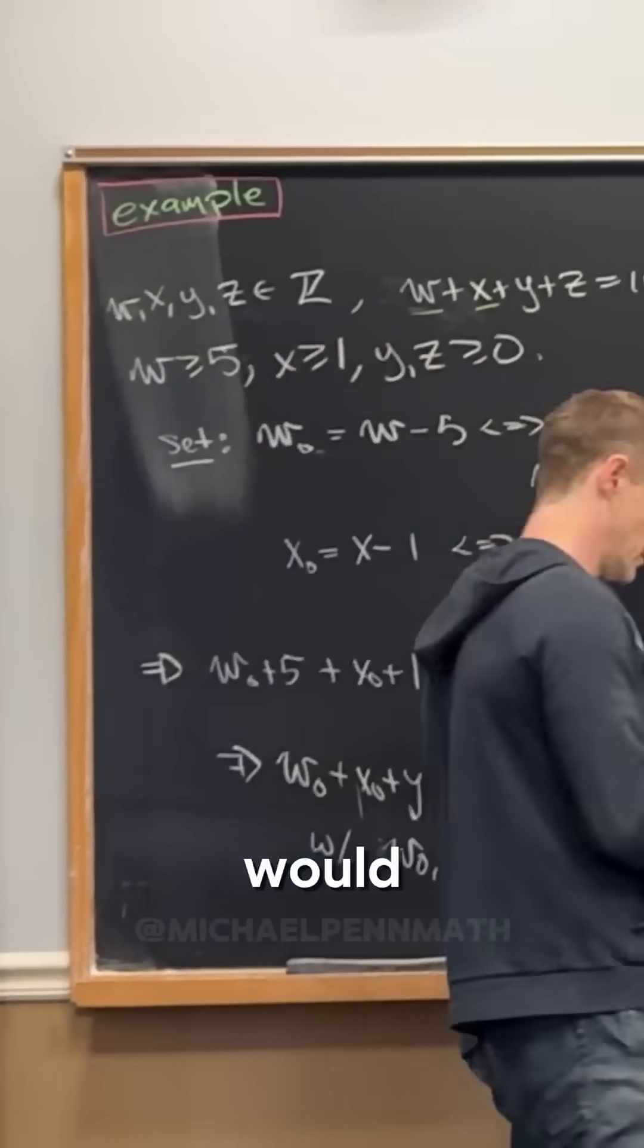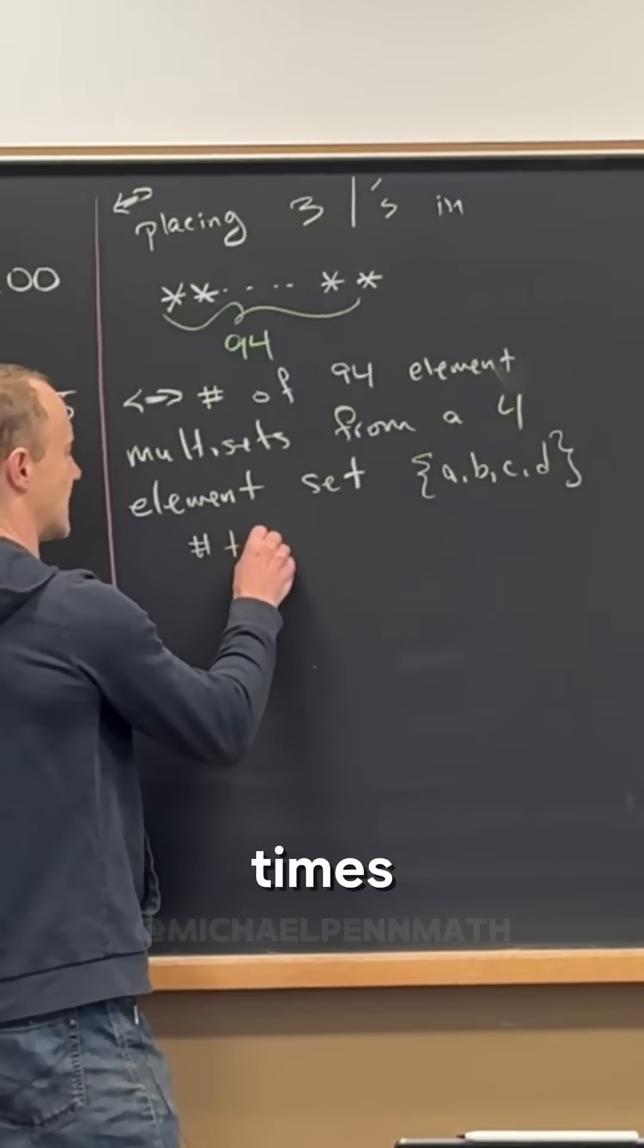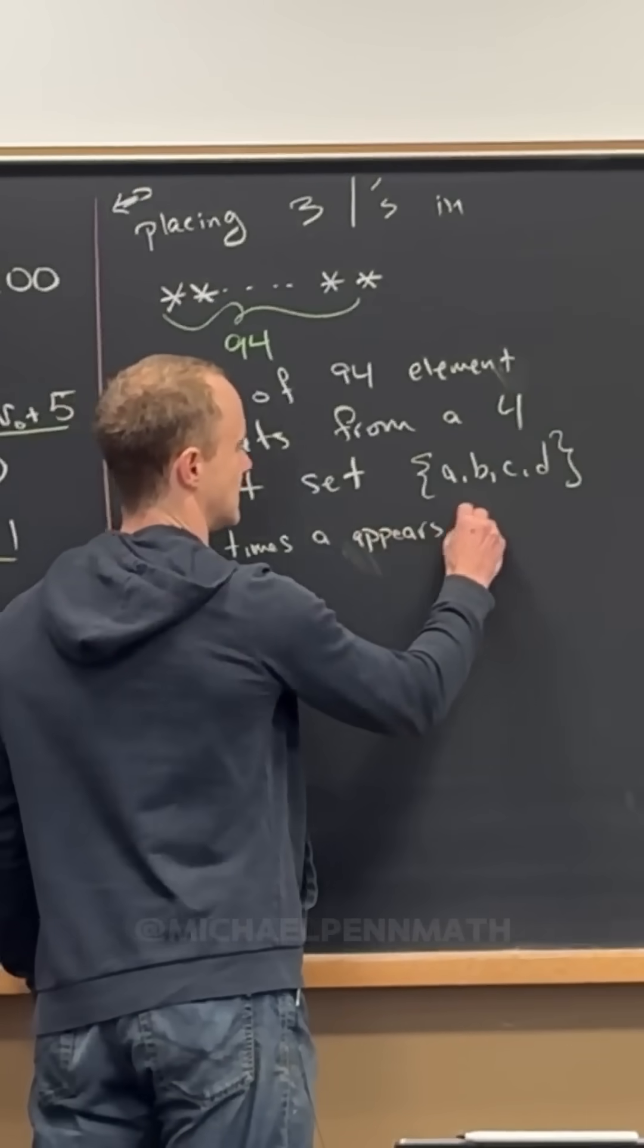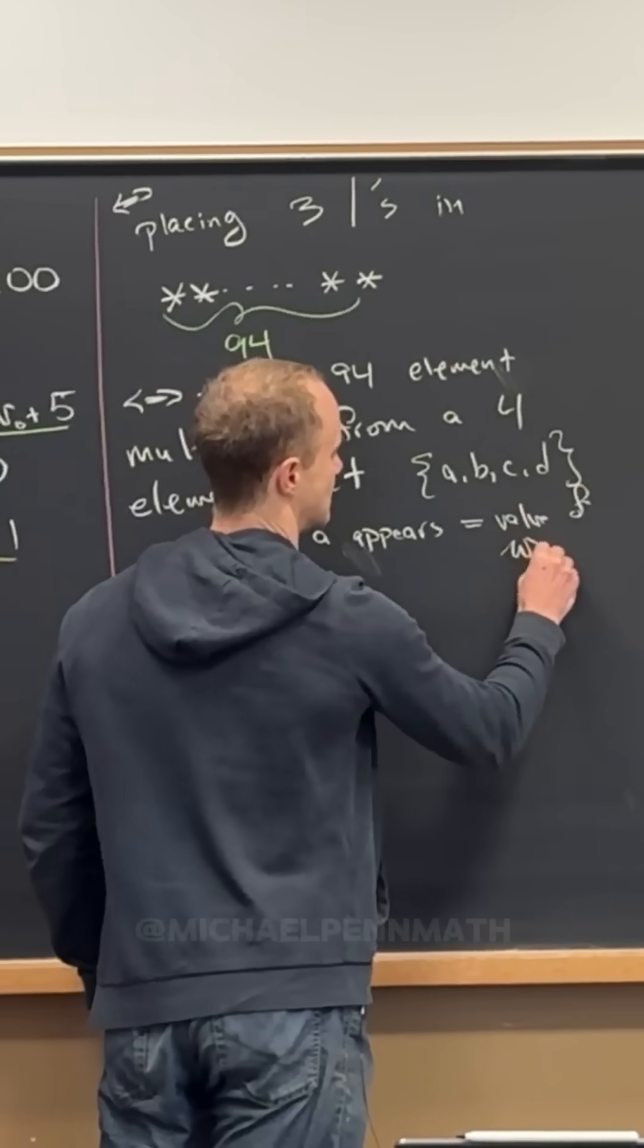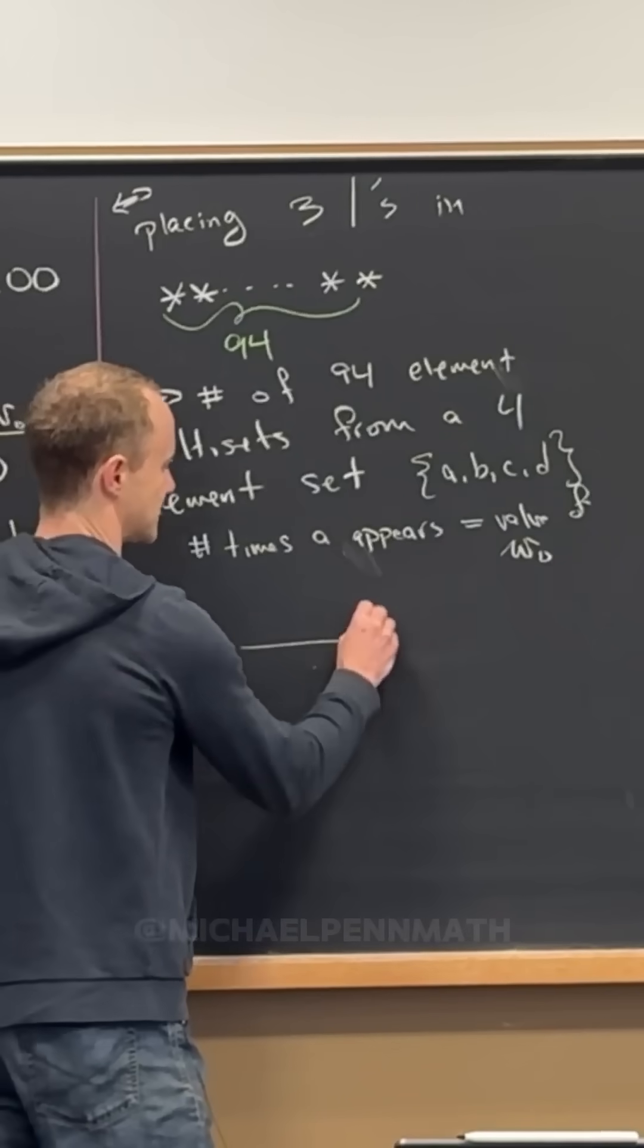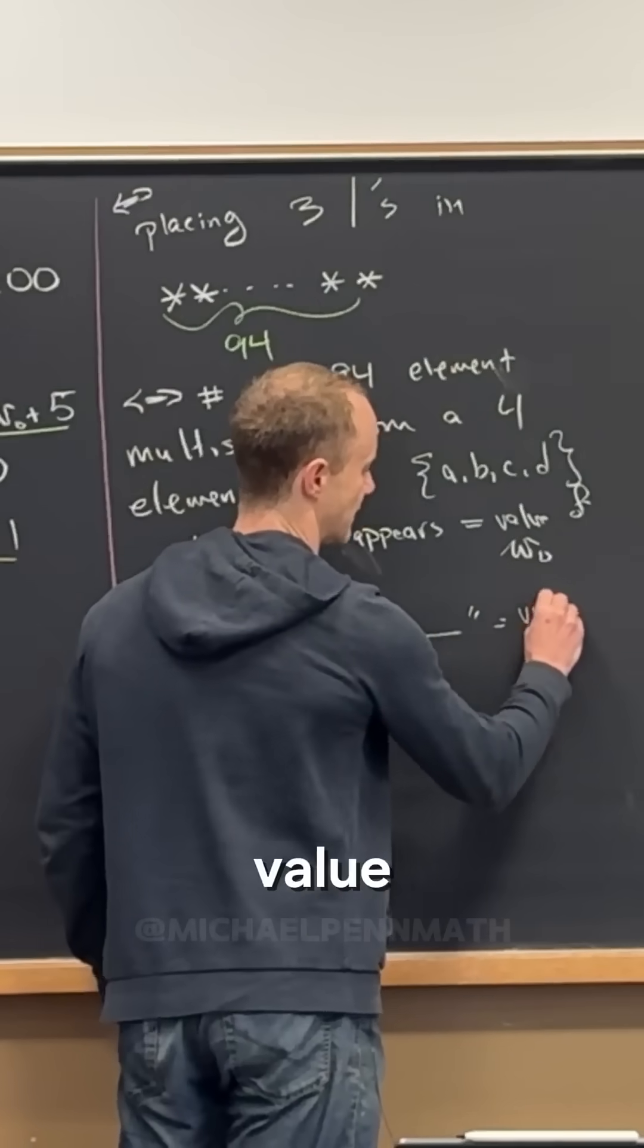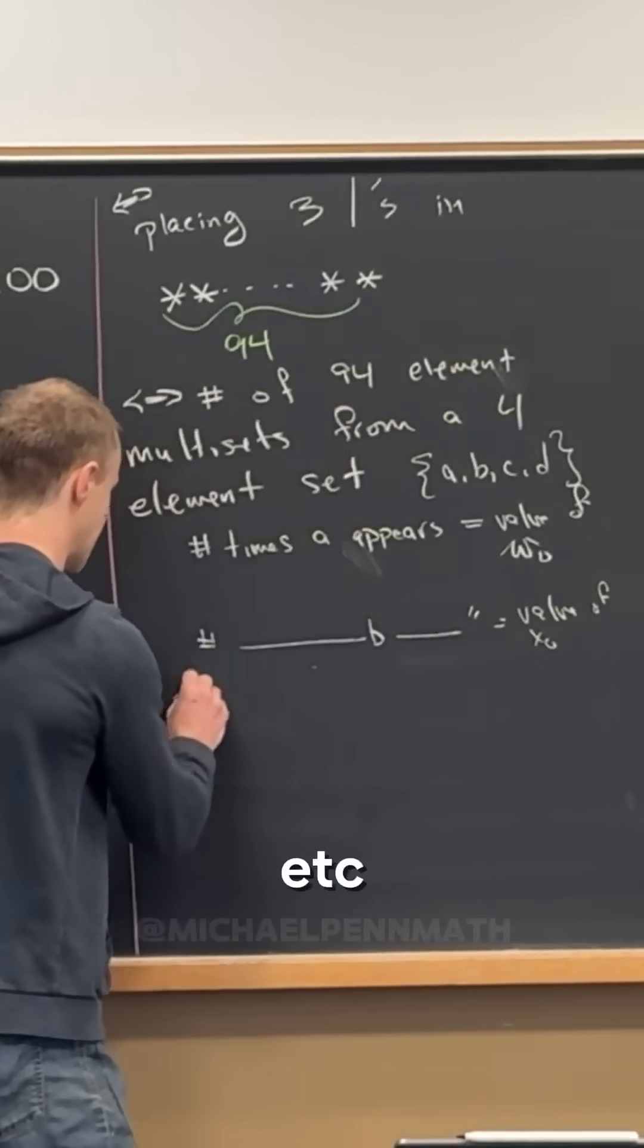And then it would break down like this. So the number of times a appears equals the value of w naught. And then the number of times b appears equals the value of x naught, and then et cetera, right?